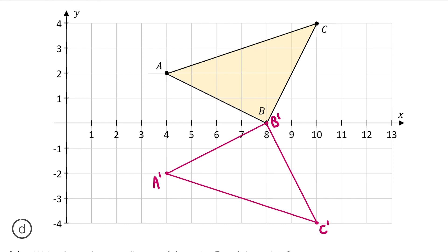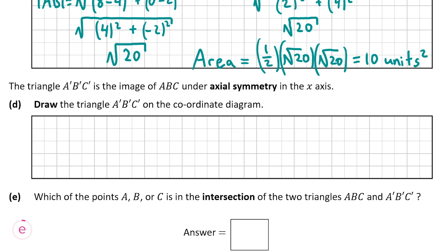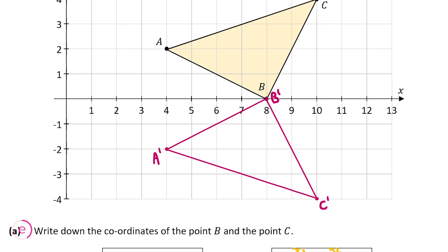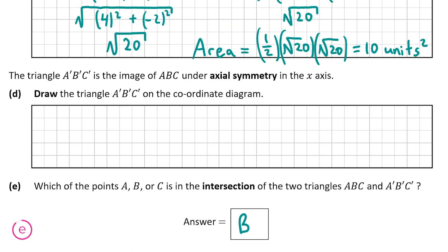That's our answer for part D. Part E asks which of the points A, B, or C is in the intersection of the two triangles ABC and A'B'C'. The point of intersection is where both triangles meet, and we can see they both meet at B (or B'). Since we're asked which of A, B, or C it is, the answer is B.